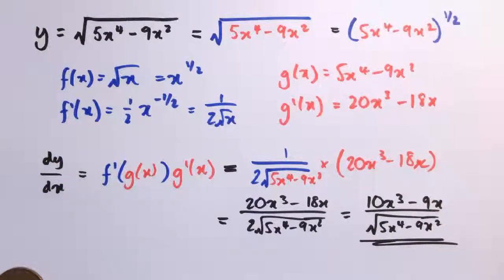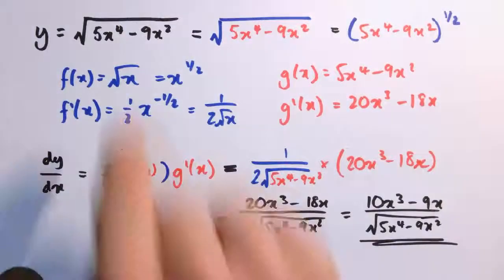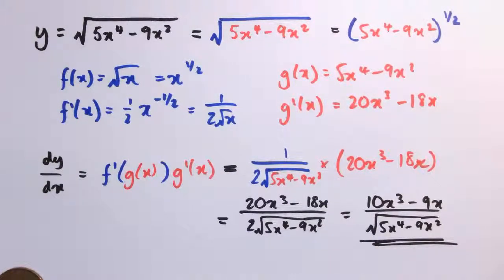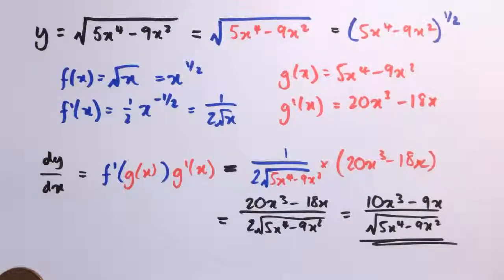The previous examples could have been differentiated by multiplying out, whereas here we couldn't have done that. The chain rule hasn't just made things easier — it's allowed us to differentiate something we couldn't differentiate before. This will be very typical of its use: there are lots of things the chain rule will allow us to differentiate, in some situations it just makes things easier, while in others we really do need to use it.